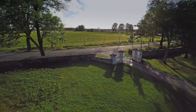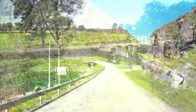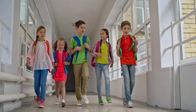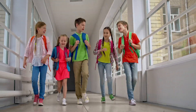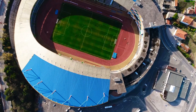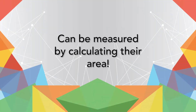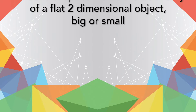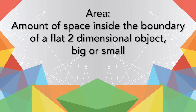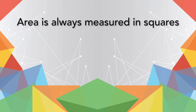Let's start by reintroducing you to what area is. Think about all the spaces around you: your yard, a nearby road, the inside of your school, the field inside a stadium, or the space inside a restaurant. All of those spaces can be measured by calculating their areas. Simply put, the area is the amount of space inside the boundary of a flat, two-dimensional object — big or small.